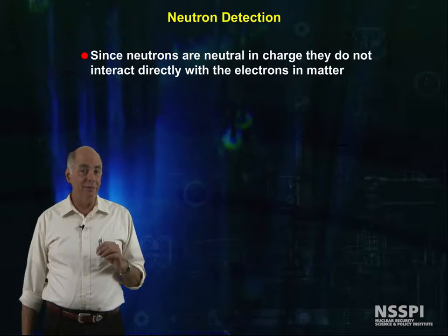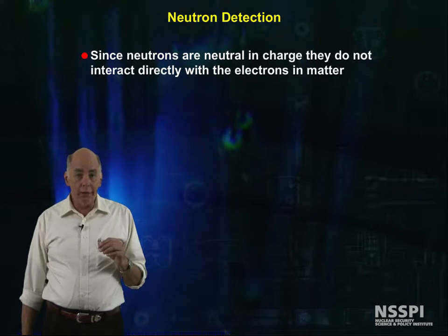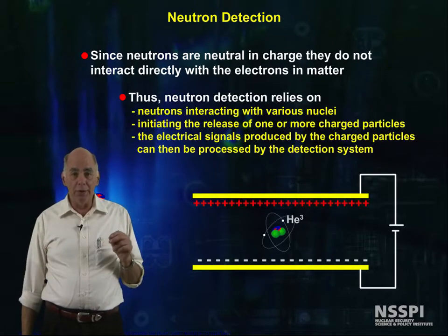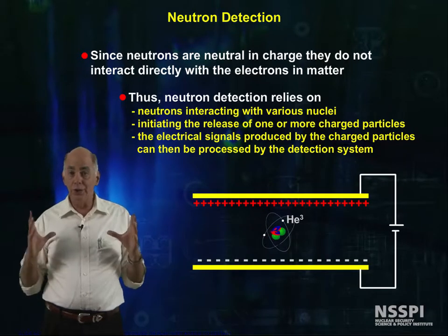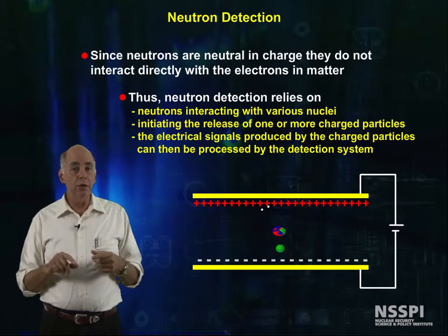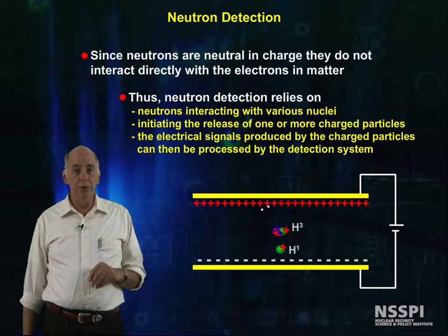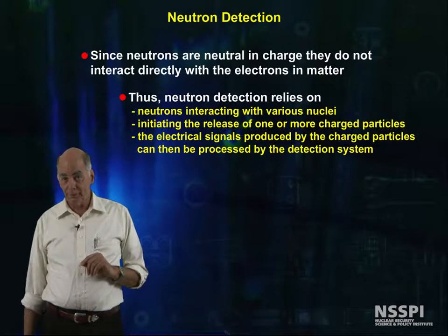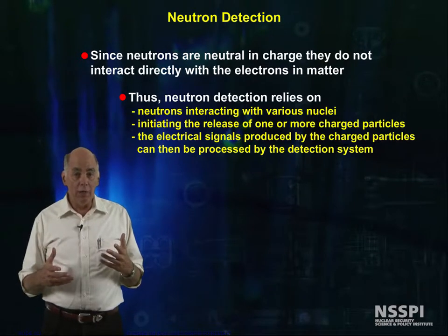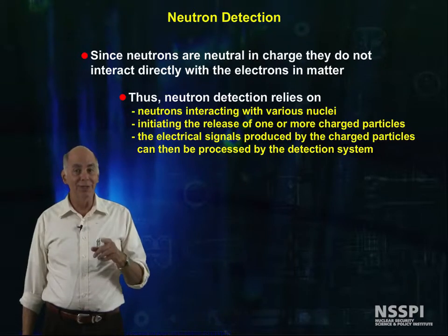However, we can adopt a different strategy. Since neutrons interact directly only with nuclei, that's our only choice. We have to somehow put nuclei with large interaction probabilities into our detector and choose those nuclei so that when they do interact with a neutron, they produce one or more charged particles. All the tricks that we already know for collecting the electrons from ionizing radiation can then be used to detect neutrons.